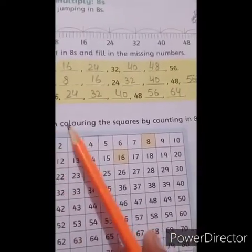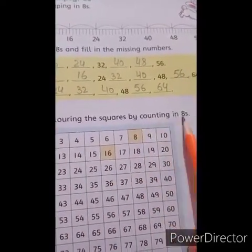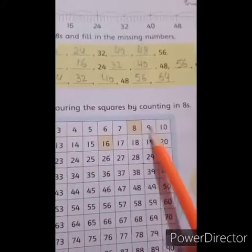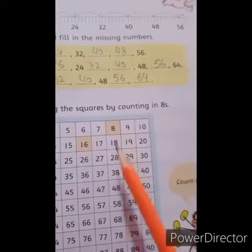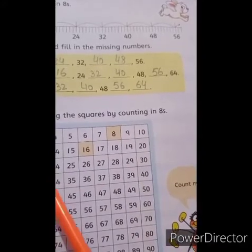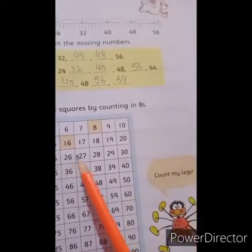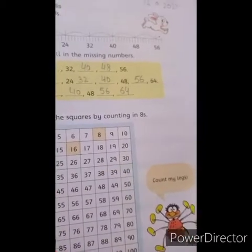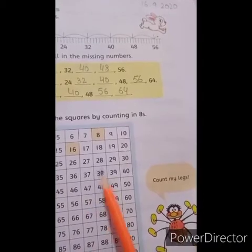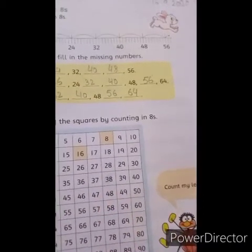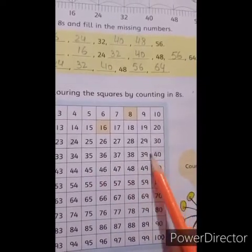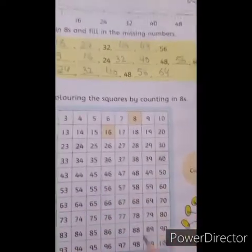Now finish coloring the squares by counting in 8s. Count 1, 2, 3, 4, 5, 6, 7, 8 — done. Repeat counting 1 to 8 and color each group of 8 squares. Color over here for each set. Now do the rest by yourself.